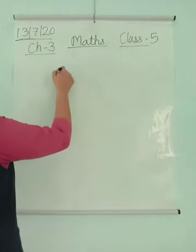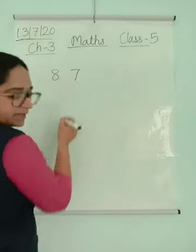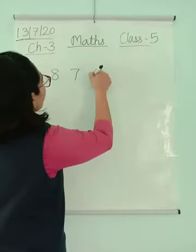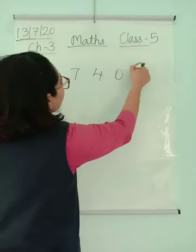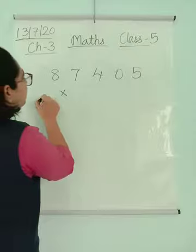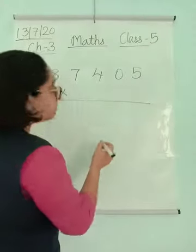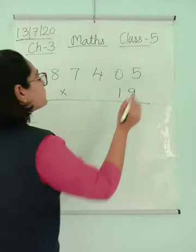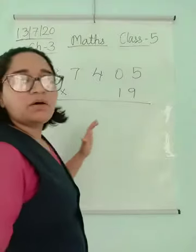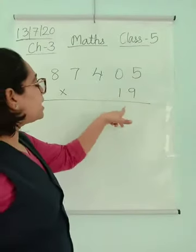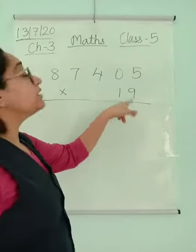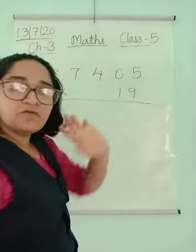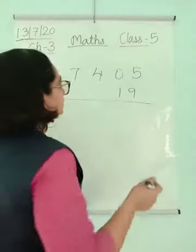Sum number 17, I am taking: 87,405 multiplied by number 19. So now since there are 2 digits, I will have 2 rows here. So I will leave 2 lines here for the carry forwards. Starting from the 1s place.